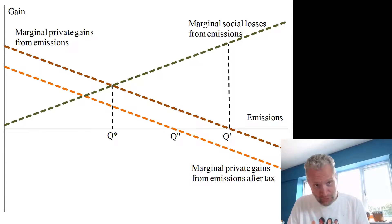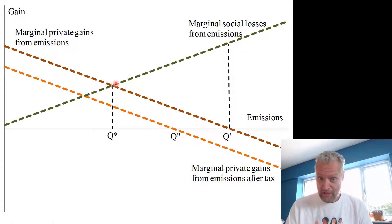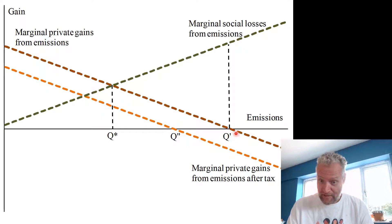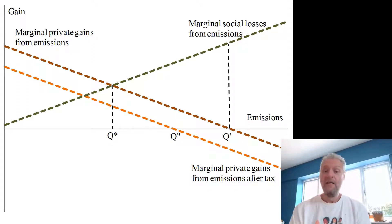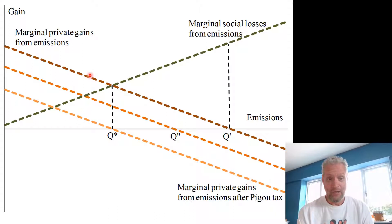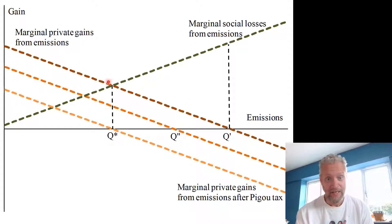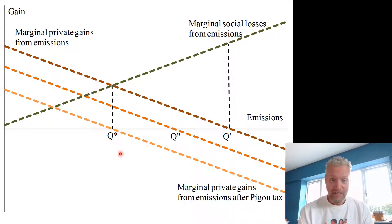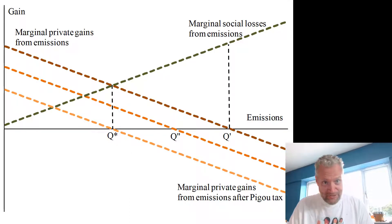Installing a tax makes the polluting activity more expensive — it increases its price. That pushes down the marginal private gains curve from the dark brown line to the light brown line, meaning emissions move from Q prime to Q double prime. There is a particular environmental tax called the Pigouvian (BGU) tax, which pushes emissions down to the optimal level — where marginal cost of emission reduction equals marginal benefits of emission reduction — to Q star.